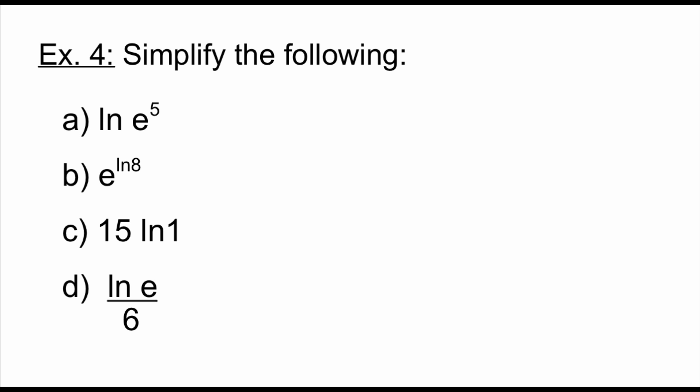So we're going to run through a few examples of just simplifying down some expressions. First one says we've got the natural log of e to the 5th. Well, we just got done saying that natural log and e exponentials are inverses of each other, so this natural log cancels out with this e, and all we've got left over is the 5. Similarly with this next one, e to this natural log power, those things cancel each other out, and all we've got left is the 8. If we're looking at 15 times the natural log of 1, we just said that the natural log of 1 is 0. So if we take 15 times 0, we get 0. Last one, we've got the natural log of e divided by 6. Well, if we take a natural log of just e, the answer is going to be 1, and we've still got that over 6.